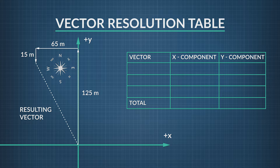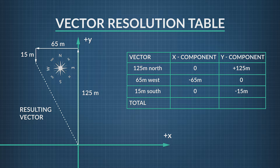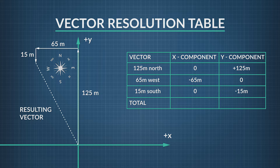Let's start by breaking down the vectors into components. We can use this chart to do that. When we fill it in, we see what part of each vector lies in the x direction and what part lies in the y direction. Let's make our positive direction lie along the positive x-axis and the positive y-axis. The x component of the 125-meter north vector is 0 meters, since it lies 100% in the y direction. The y component is positive 125 meters. The x component of the 65-meter west vector is negative 65 meters, since it is wholly in the negative x direction. The y component of this vector is 0 meters. The 15-meter vector has an x component of 0 meters and a y component of negative 15 meters, since it lies totally in the negative y direction. When we add up all the x components, we get negative 65 meters. When we add up all the y components, we get positive 110 meters. We'll use these totals to find both magnitude and direction of our resultant.